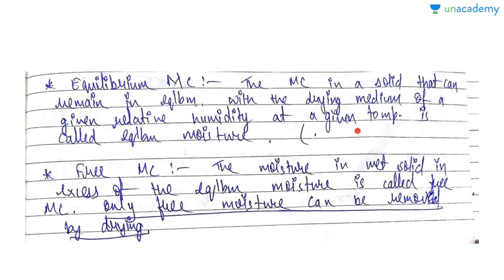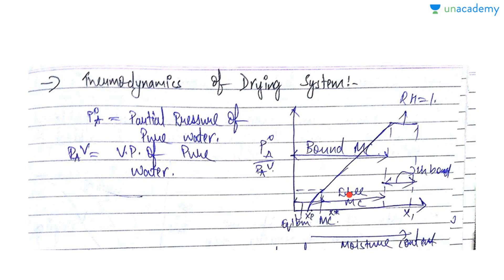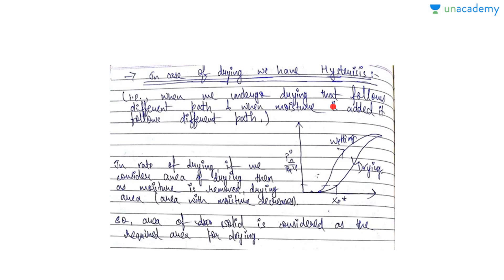Equilibrium moisture content is the moisture content in a solid that can remain in equilibrium with the drying medium of a given relative humidity at a given temperature. After a certain time, an equilibrium relation is established where transfer will not take place. Free moisture content is the moisture in a wet solid in excess of the equilibrium moisture content. Remember: only free moisture can be removed by drying; equilibrium moisture cannot be removed.